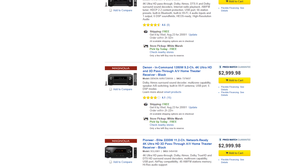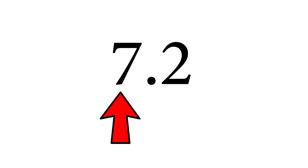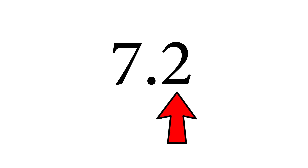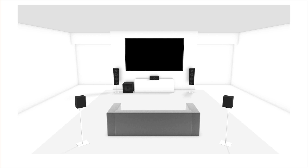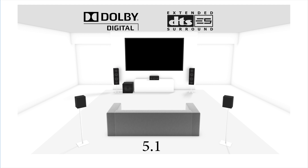These numbers basically refer to the number of speakers that the receiver supports. The first number tells you how many full range speakers it supports and the second number tells you how many subwoofer speakers it supports. A basic home theater surround sound setup is going to be considered 5.1 and this includes a center channel, two main speakers, two surround speakers, and a subwoofer.